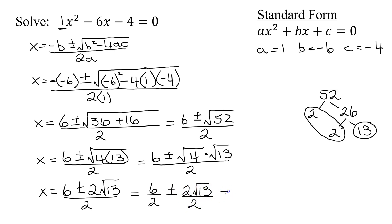Now I can reduce 2 goes into 6 3 times. So I'm going to get 3 over 1, which is 3. Plus or minus these 2s both reduce. I get plus or minus the square root of 13.